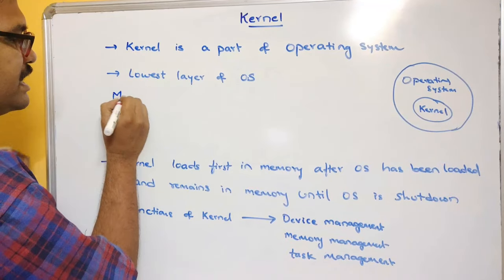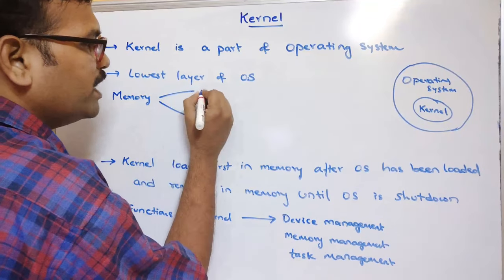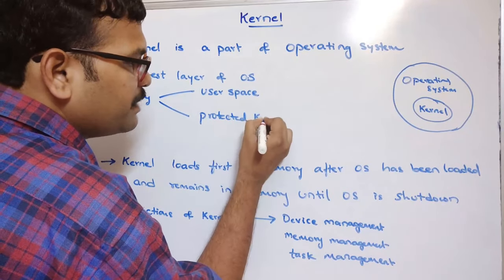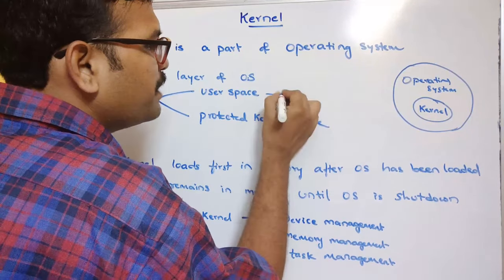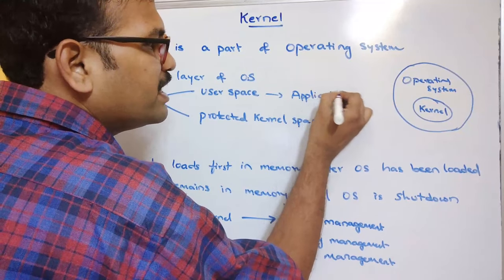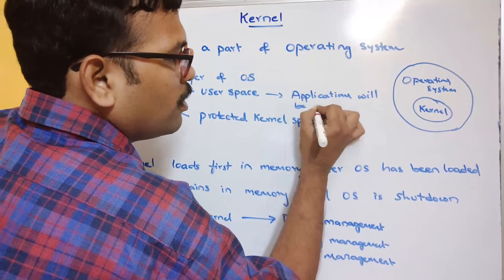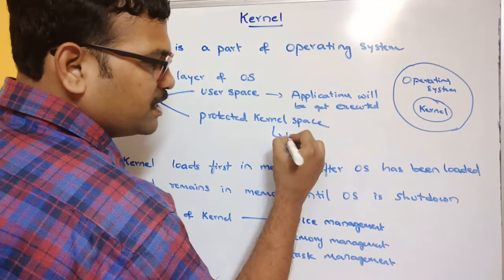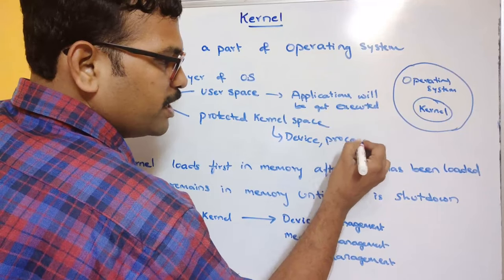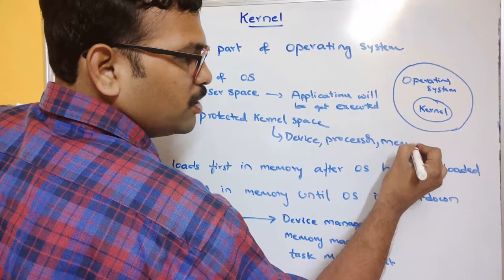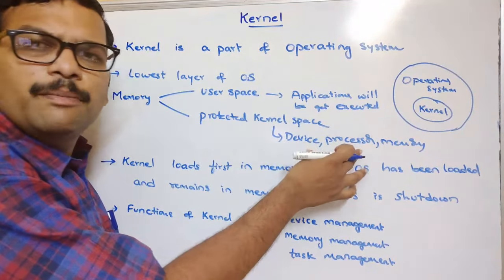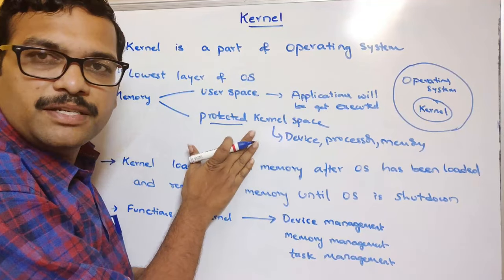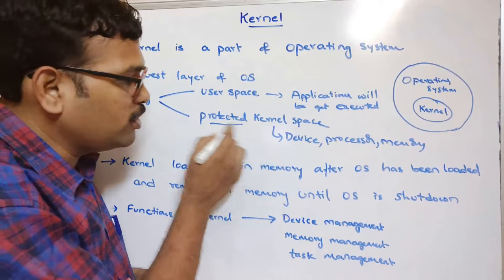Memory is divided into two types: one is user space and another is protected kernel space. In the user space, all the applications will be executed. In the protected kernel space, all services are performed — device management, processor management, task management, memory management — and these are not visible to the user. No other application can access this protected kernel space.